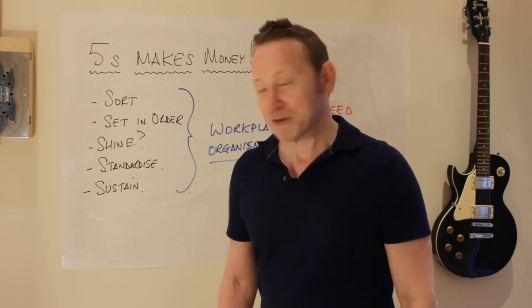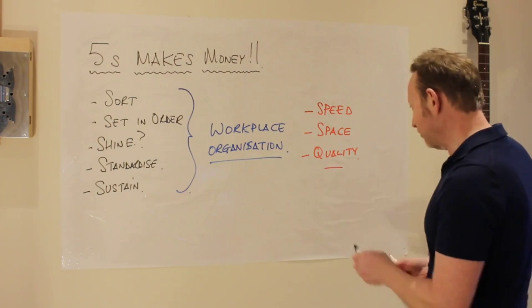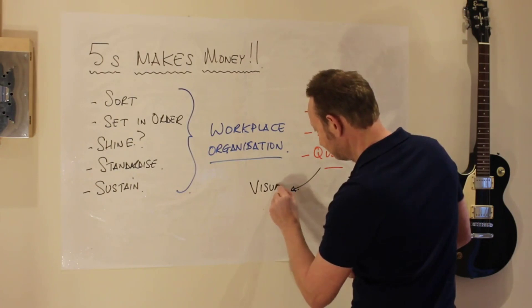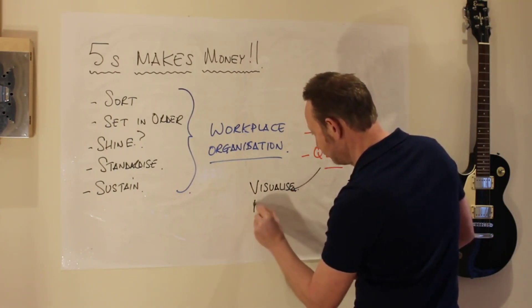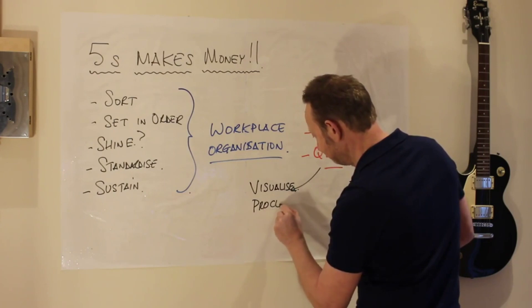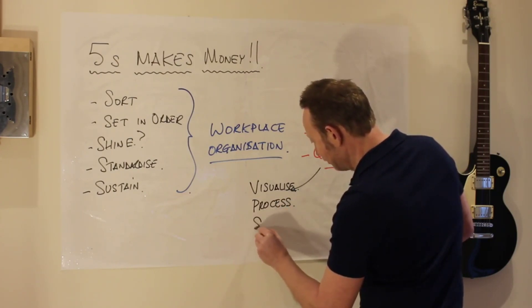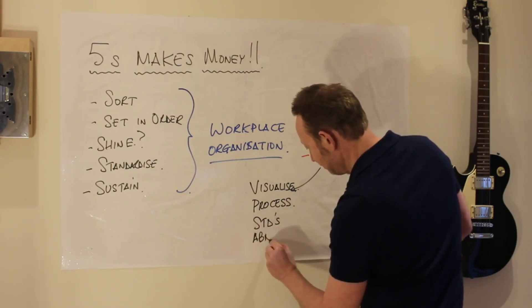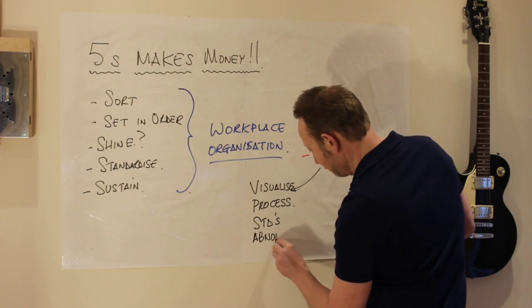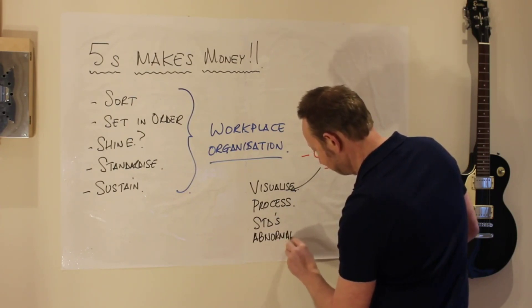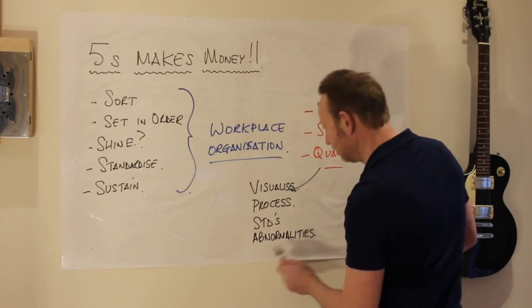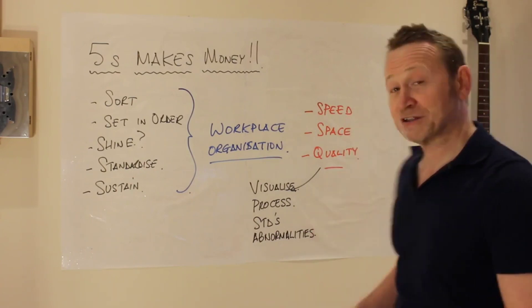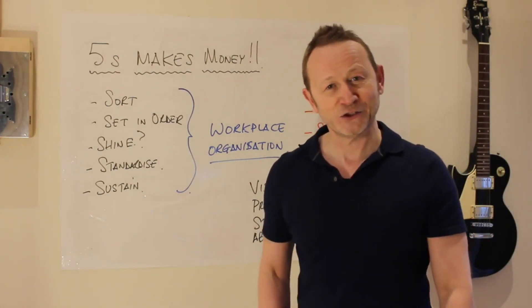In order to do that, the aim of workplace organization is to visualize the process, visualize the standards, and ultimately visualize abnormalities. That's what 5S does — visualize the process — and you make sure you've got the fastest, smallest space and the best quality in your workspace.